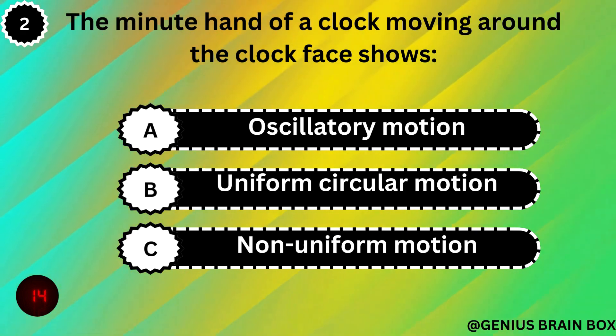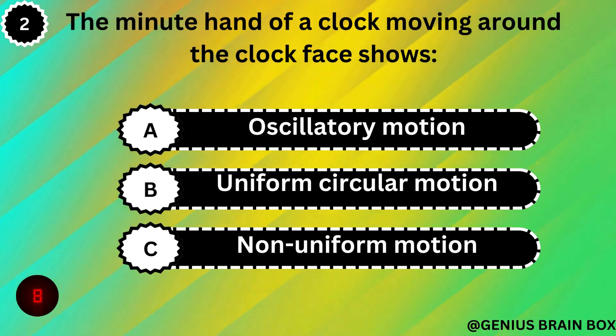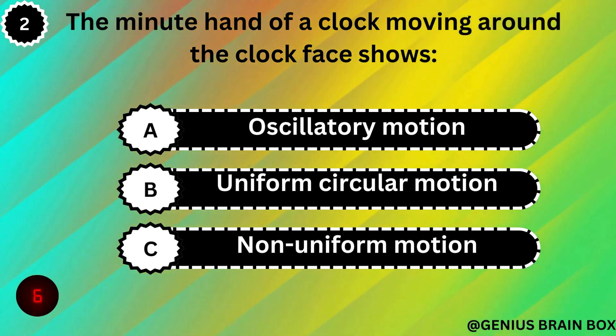The minute hand of a clock moving around the clock face shows: oscillatory motion, uniform circular motion, or non-uniform motion.